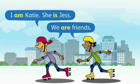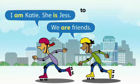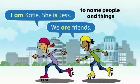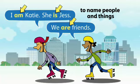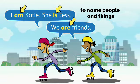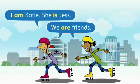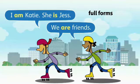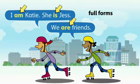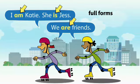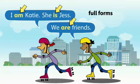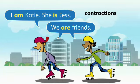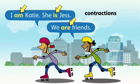We use 'be' to name people and things. We usually use full forms in formal writing and contractions in conversation.